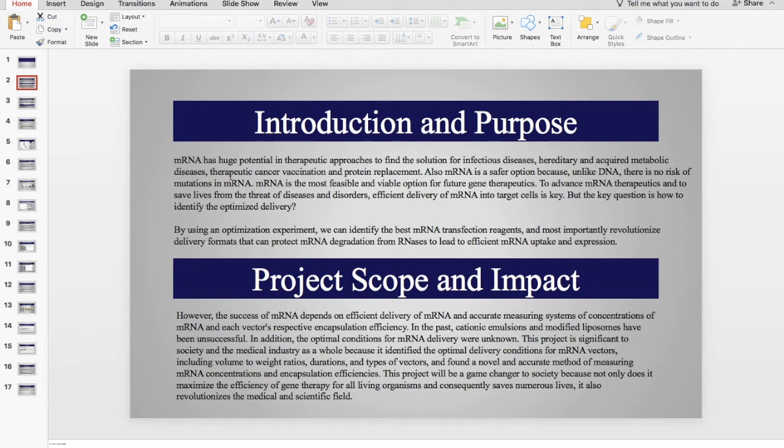Cationic lipids and liposomes are essentially inefficient because while transporting the mRNA into the patient body or even DNA into the patient body, they lose these nucleic acids in the process. Our goal was to find optimal conditions such as the type of vector, the volume to weight ratio, the time durations, and other factors such as interference that could help optimize the gene therapy process.